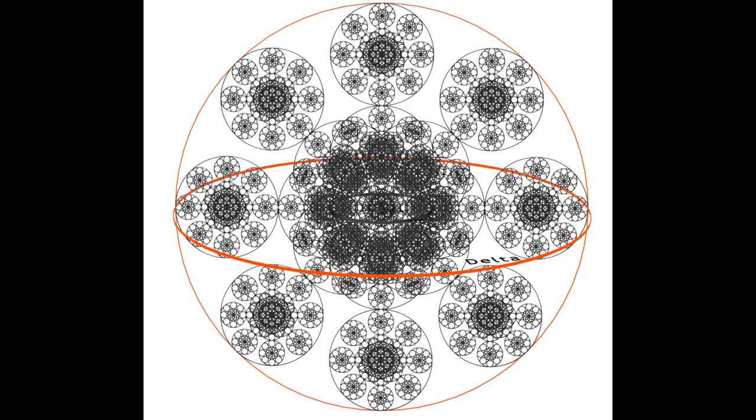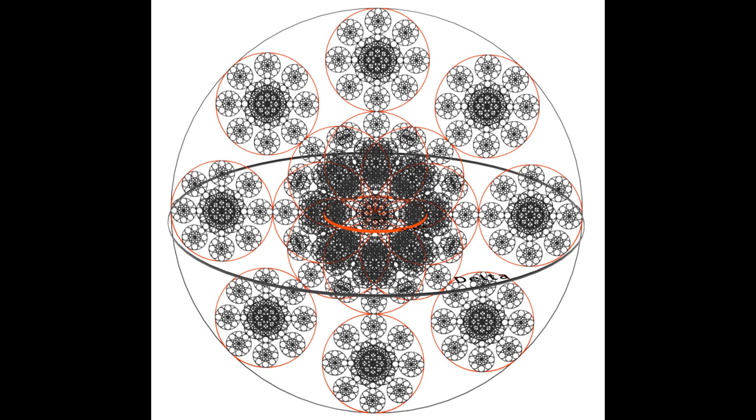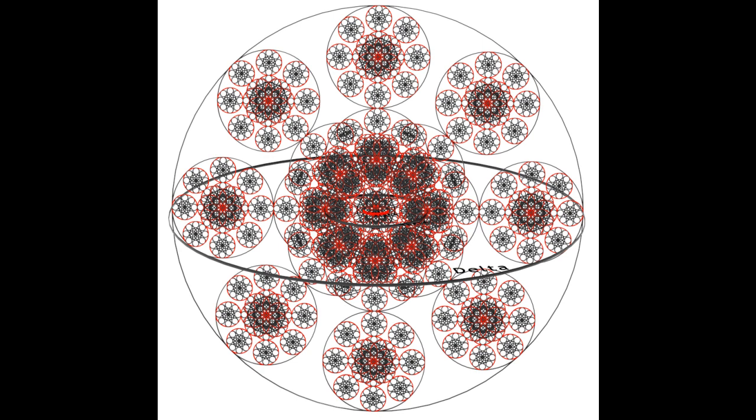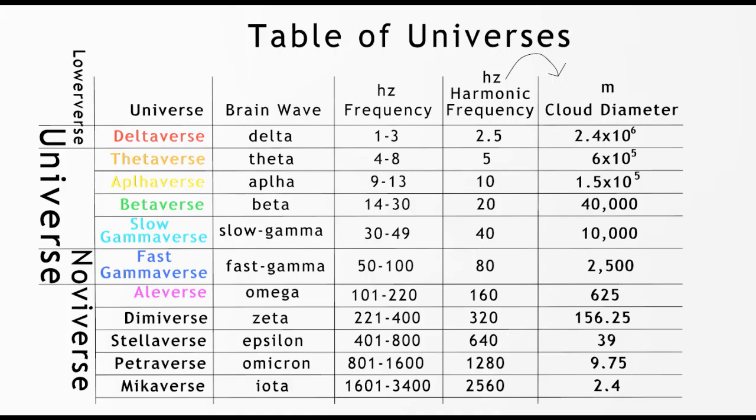The next conscious wave type that would come into existence would be the theta wave type, followed by the alpha, then beta, slow gamma, and ultimately fast gamma. Based on this model, you could say that the next conscious harmonic that will be appearing in human experience will be what we have named the omega wave, or aliverse.